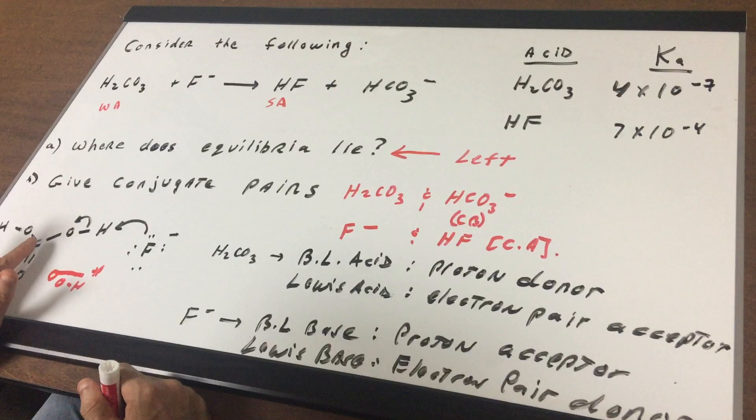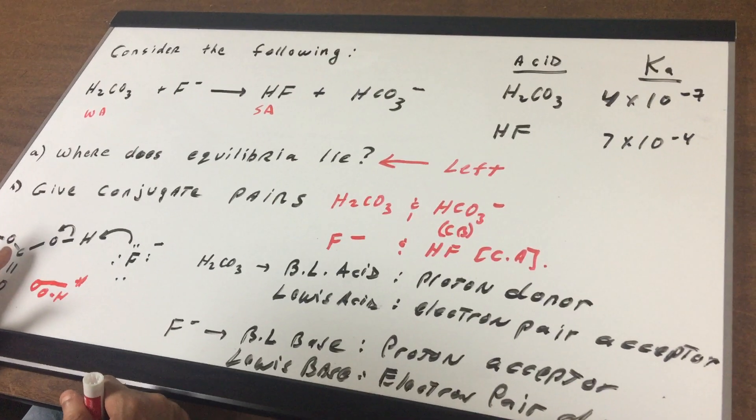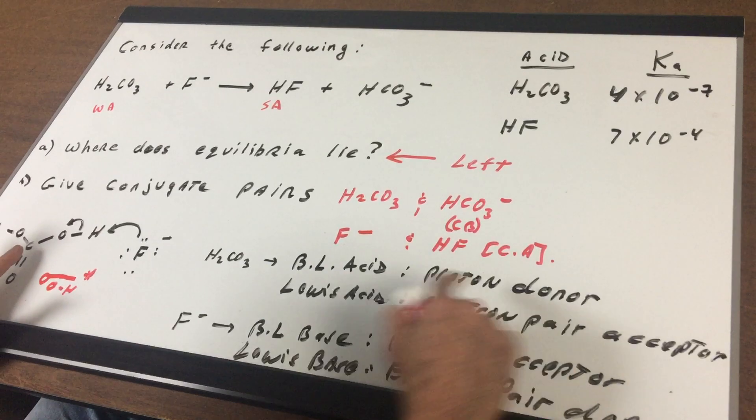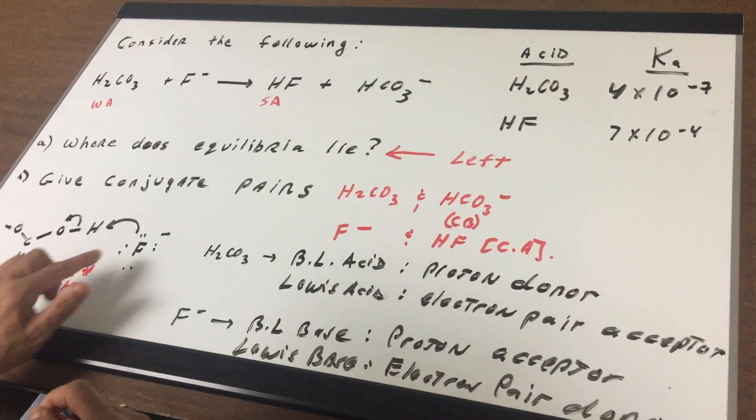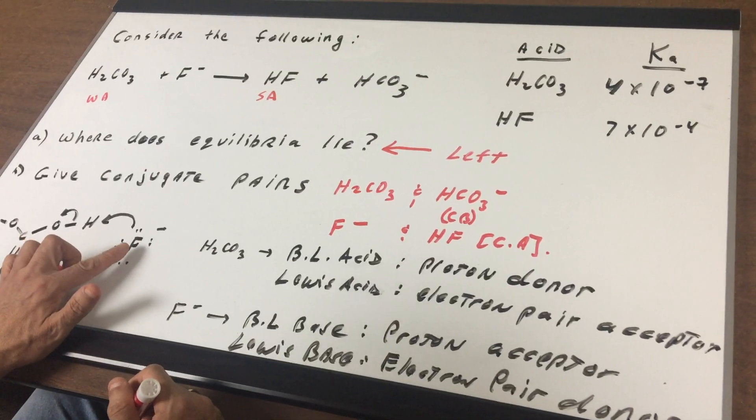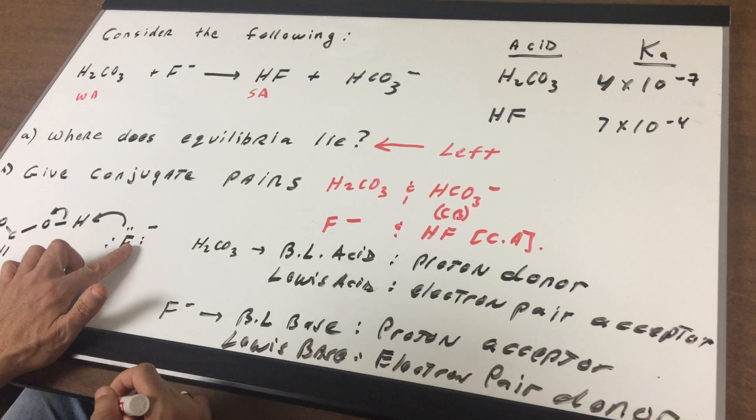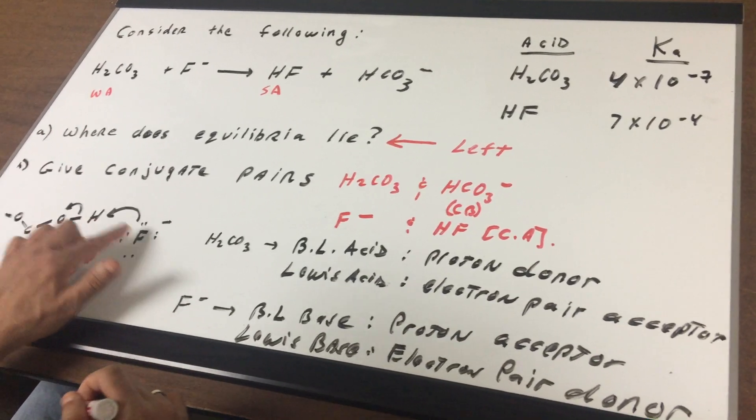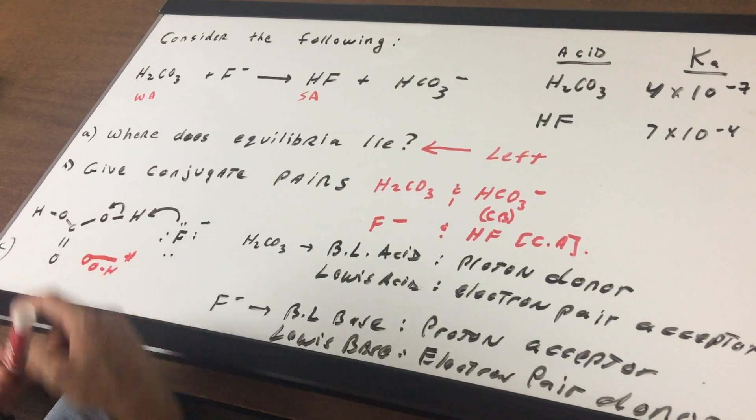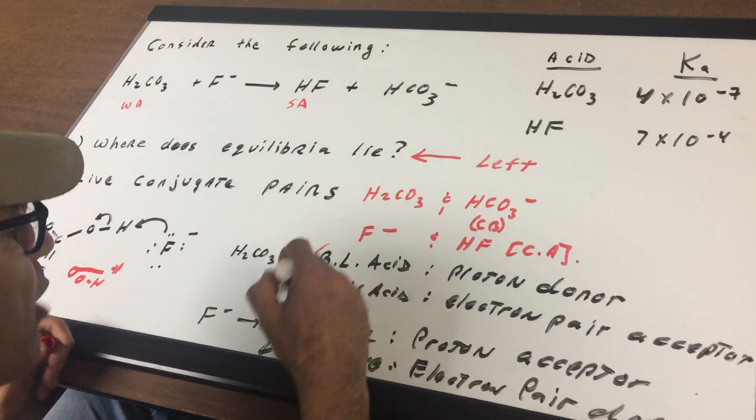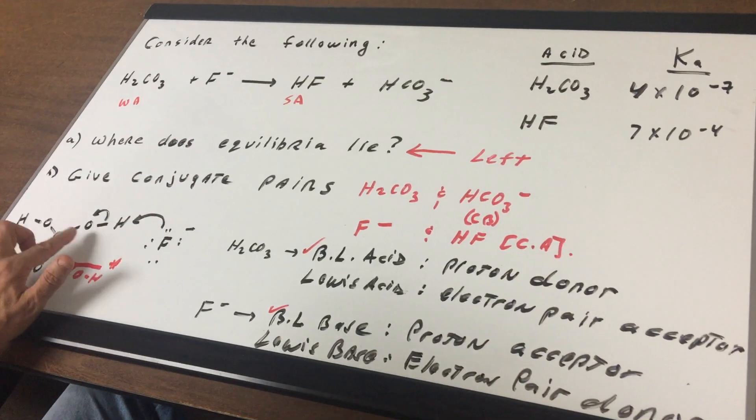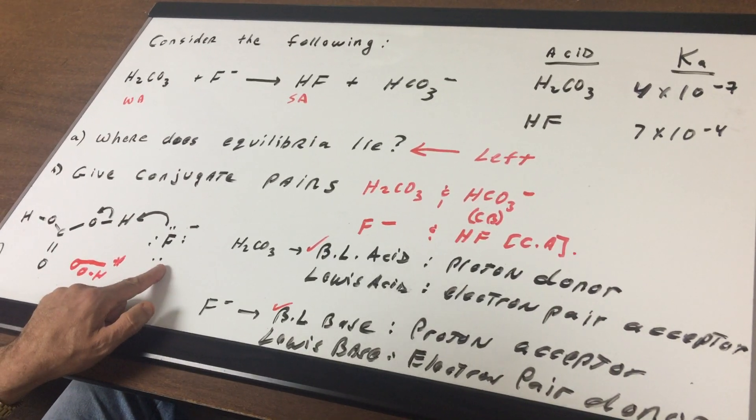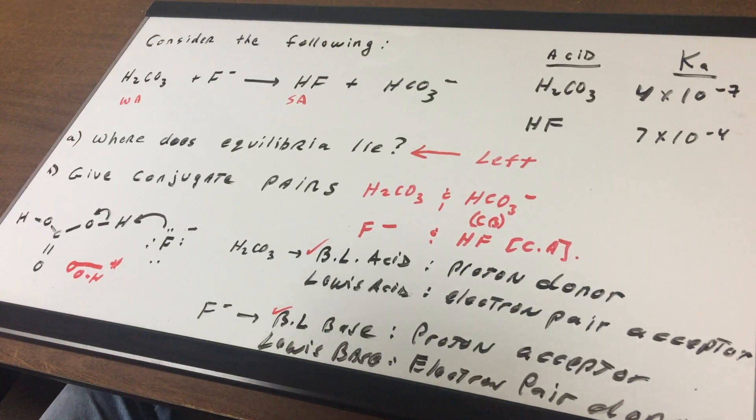First of all, this would be considered a Brønsted-Lowry acid because, as you can see, it is a proton donor. It's giving off an H. And this is a Brønsted-Lowry base. Why? Because it's accepting a proton. So the Brønsted-Lowry definition of an acid is a proton donor, and that's exactly what's happening here. And Brønsted-Lowry base is a proton acceptor.